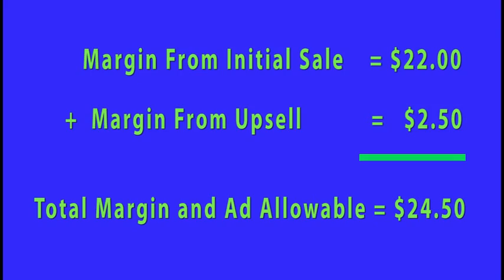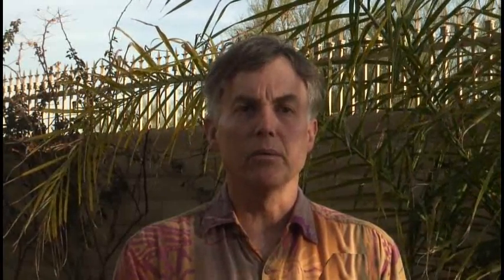To determine if your media buy is paying out, compare your ad allowable with your actual media cost per order, or CPO. Media that generated a CPO less than your ad allowable is profitable, and you will probably want to buy more of it.